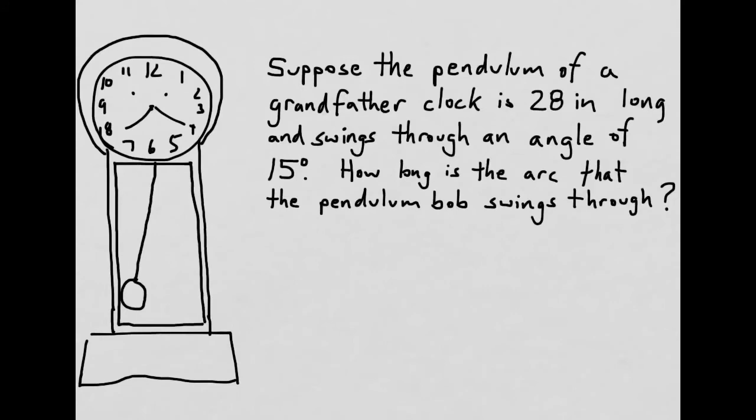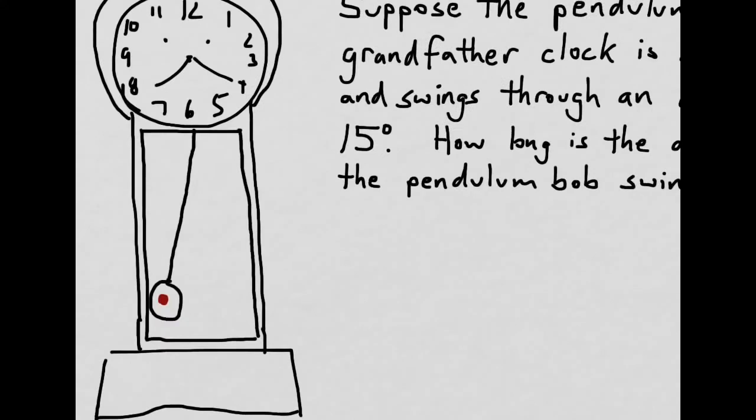We want to know how long is the arc that the pendulum bob swings through. So the pendulum bob is this part of the pendulum. Let's label the clock here with what we know. We know that the length of the pendulum is 28 inches.